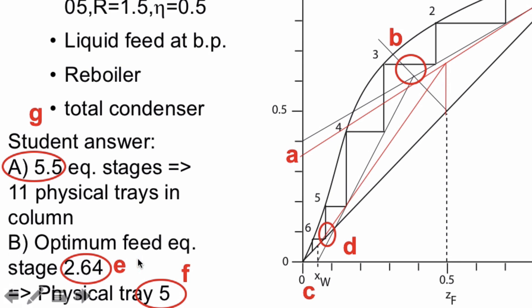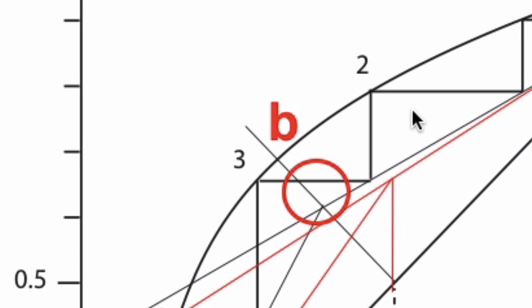E. The student says that the optimum feed location is 2.64. That can't be right. If you see here, if you go directly above that, that's clearly less than half the distance from here to here compared to there to there. So that must be less than 2.5, right?